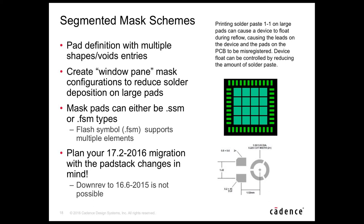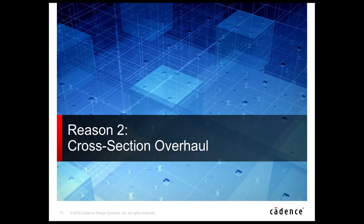An important migration note: plan your 17.2 migration with the padstack changes in mind. Down-rev to 16.6 is not possible for the pad file or the .brd file. You may want to consider maintaining two libraries — both 16.6 and 17.2 — as you transition. Some customers will simply go straight to 17.2 and not look back. Reason number two is the overhaul of the cross-section editor.